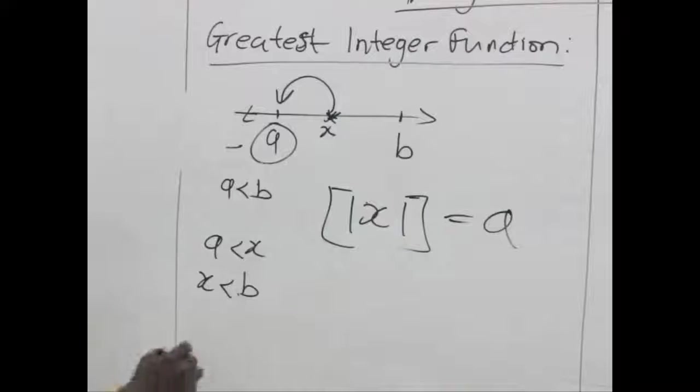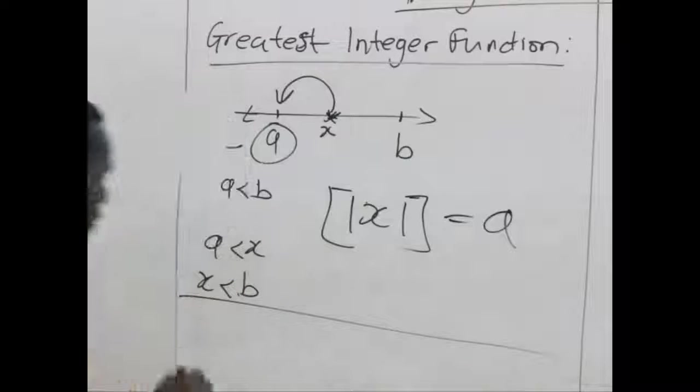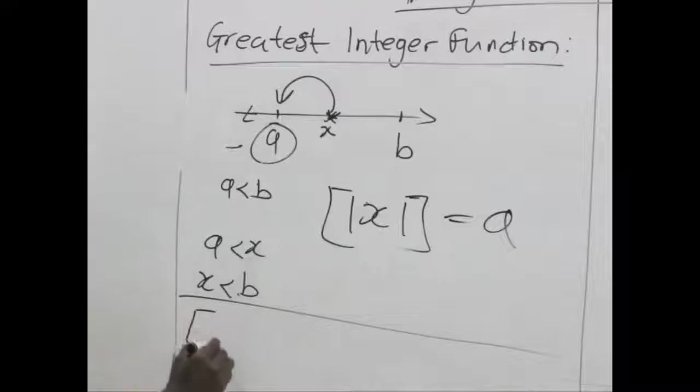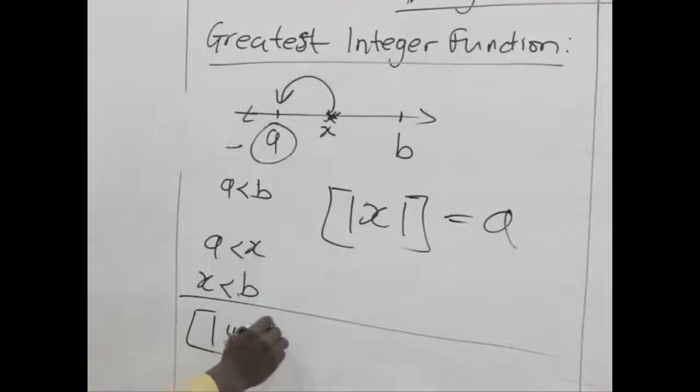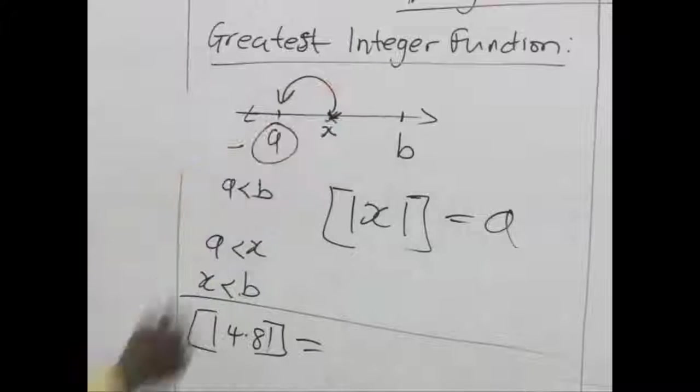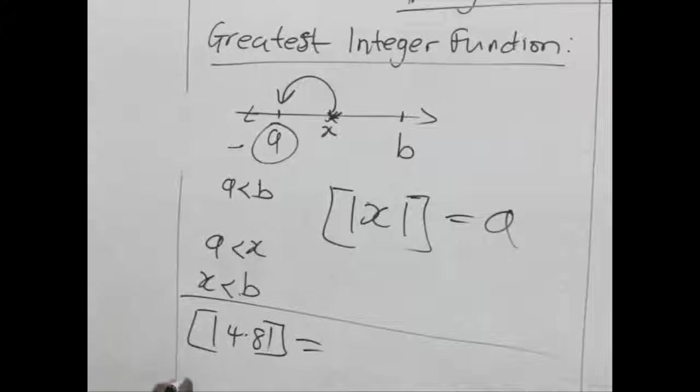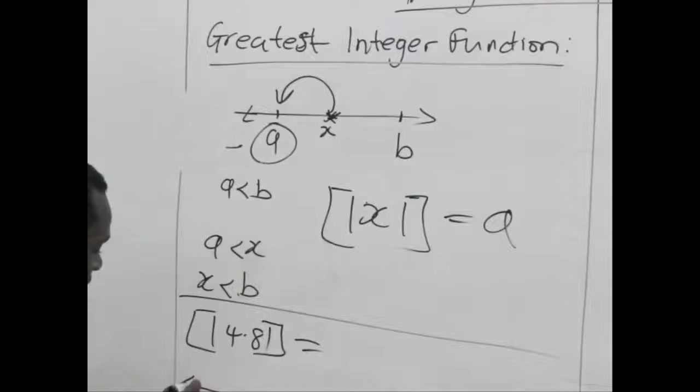Let's take some examples. Assuming you have this number. Find the greatest integer function for 4.8. What will you do? Now using this kind of number line. We first ask ourselves. When I have a number line. I need two values at the extreme.